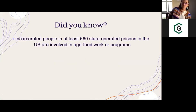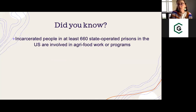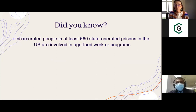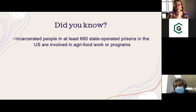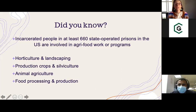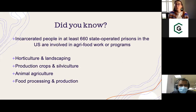Here's a did you know: did you know that there are actually incarcerated people in at least 660 state operated prisons in the US who are involved in agri-food work or programs? This figure comes from our data at the CSU Prison Agriculture Lab. We did a massive nationwide data collection effort where we contacted all of the prisons, spoke with officials, and also used archival methods examining state government publications and documentation of prison agriculture. Once we developed our initial data set of the prisons themselves, we classified all of the activities at prisons into four main categories based on the type of agricultural or food work or programs, and we assessed the reasons why prisons engaged in agriculture, grouping those into themes we called purposes.